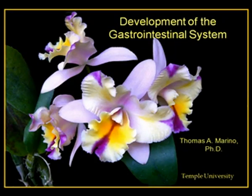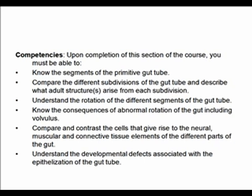This presentation covers the development of the GI system, focusing on the formation of the gut tube from the esophagus all the way down to the anal canal. After this lecture, you should be able to define the segments of the gut tube, discuss the different subdivisions and what adult structures arise from each, understand the rotation of the gut and the consequences of abnormal rotation, and identify the cells in the gut tube including neural, muscular, connective tissue, and endocrine cells, as well as developmental defects.